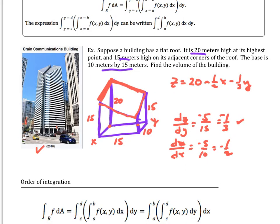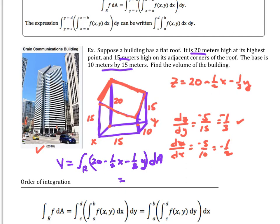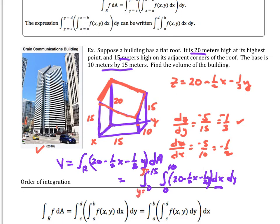The volume is represented by the integral over region R of (20 − (1/2)x − (1/3)y) dA. Writing this as a double integral, the x's run from 0 to 10 and the y's run from 0 to 15. So we have the integral from 0 to 15 in y, and the integral from 0 to 10 in x, of that expression.